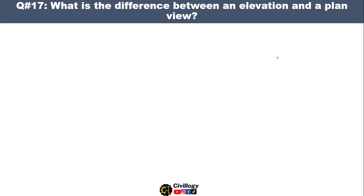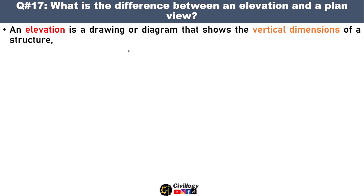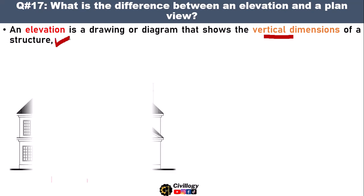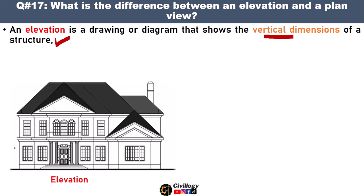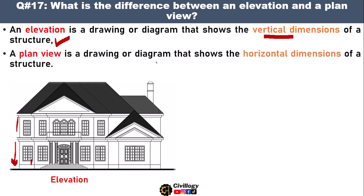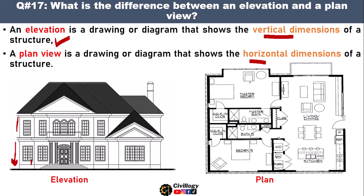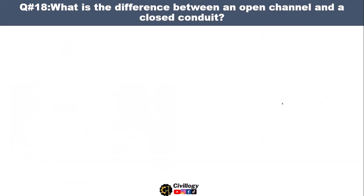Question number seventeen: what is the difference between an elevation and a plan view? An elevation is a drawing or diagram that shows the vertical dimensions of a structure — you can get the heights of each story, the plinth level, and sill level from it. Whereas a plan view is a drawing that shows the horizontal dimensions of a structure, such as room dimensions and the widths of doors and windows.